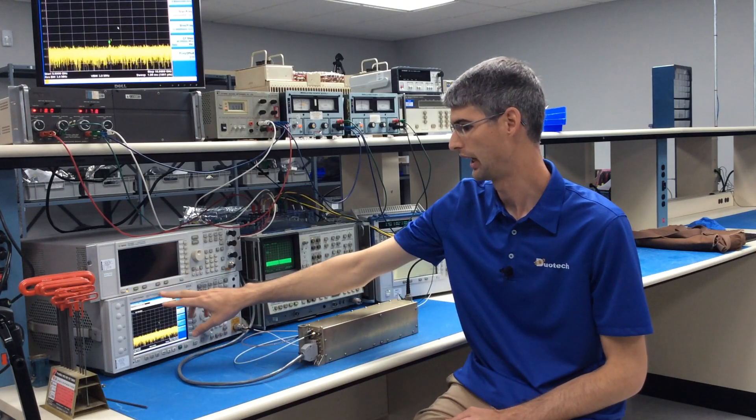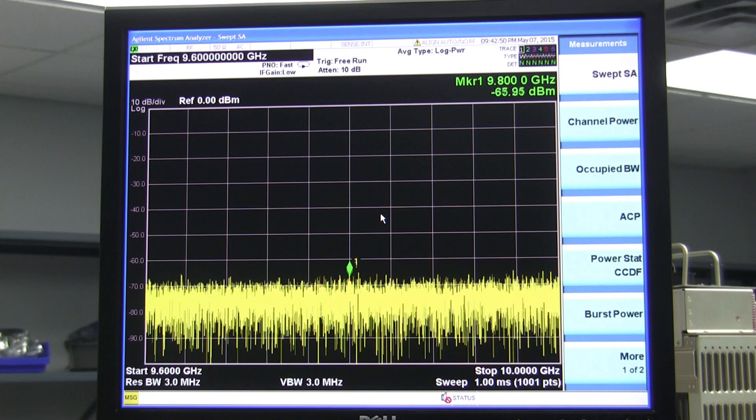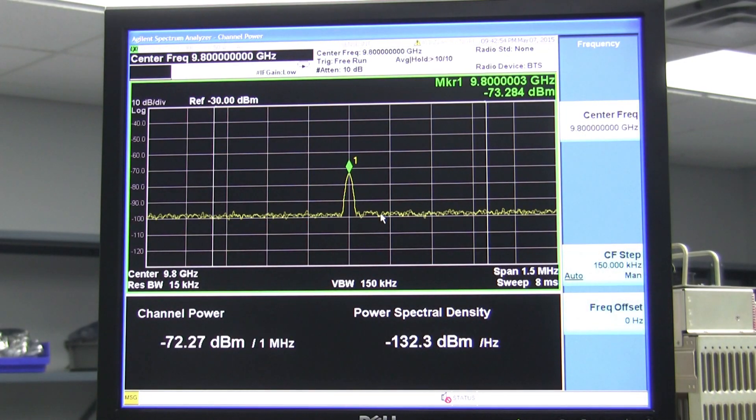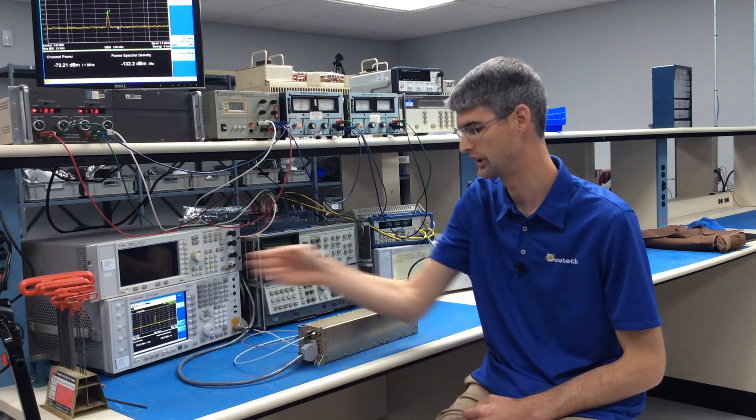The MXA has another measurement option shown as channel power, where I can center at the 9.8 GHz frequency with the desired bandwidth, and it will integrate across that range. If I make that very narrow, I can get a much quieter reading to be able to actually see the signal outside of the noise floor.